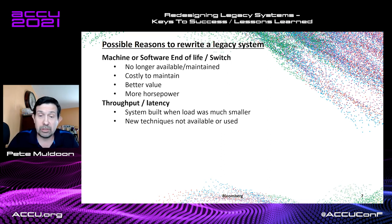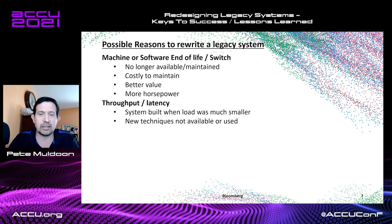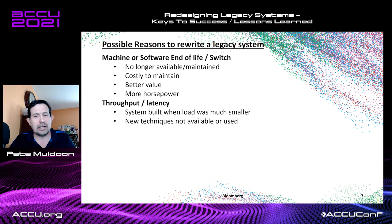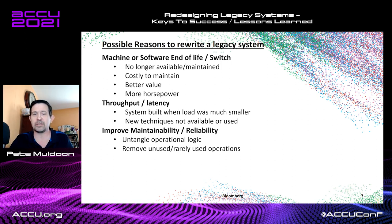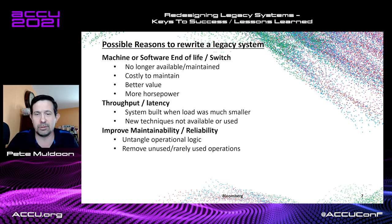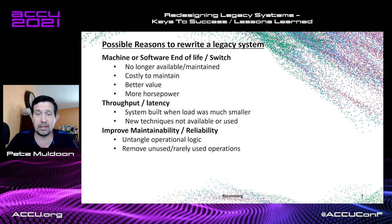Another reason is throughput or latency — a system was built when loads were much smaller, with less threading. Systems that have been around a long time organically grow, with lots of different people and enhancements done in different ways, and they become hard to maintain. That's the next reason: maintainability or reliability. You touch one place in the code and it falls over somewhere else. It's very tightly coupled, the operational logic is unclear, and there may be large parts of the code that are rarely used or not used anymore — but the codebase is so large you just don't know.